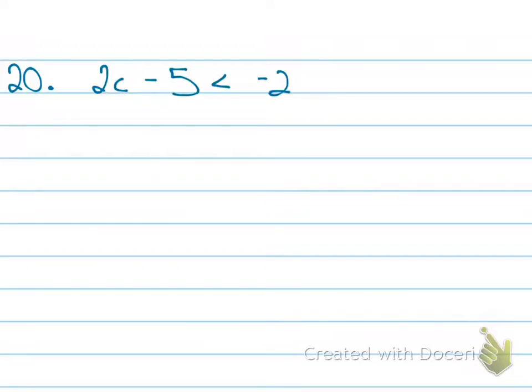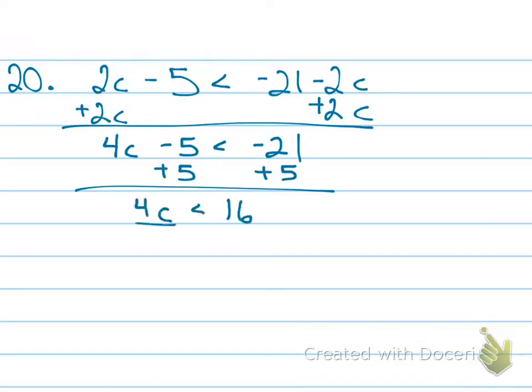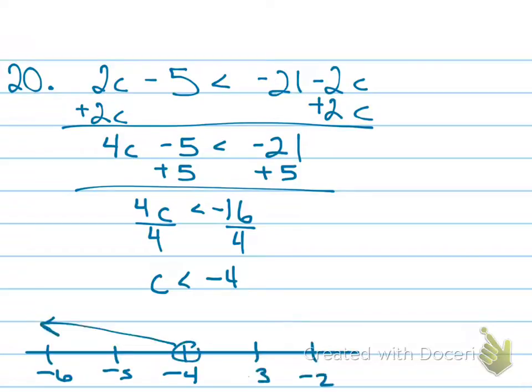On number 20, we need to... Here's my advice to you. I would move the lesser of the two values because I don't want to deal with a negative coefficient. Especially when it comes to inequalities because then I have to mess with changing my inequality sign. I added 2C to both sides, and then I added 5 to both sides. 4C is less than negative 16. So C is less than negative 4. Open dot on negative 4, and arrow going left.